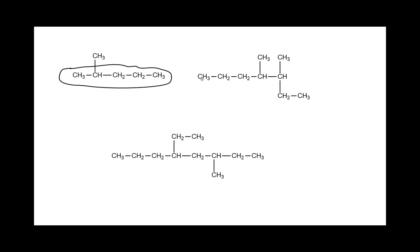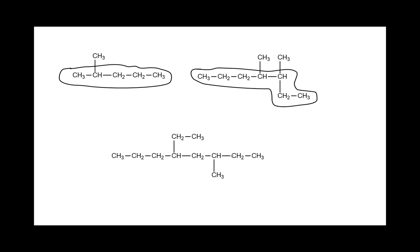For the next compound, the longest chain goes 1, 2, 3, 4, 5, 6, 7 — seven carbons. Going up at any branch point would make it shorter. So I'll mark off that seven-carbon chain. And for the compound on the right, the longest chain is drawn straight from left to right: 1, 2, 3, 4, 5, 6, 7, 8 — eight carbons. I'll mark that off as well. Sometimes the chain is drawn straight; other times it's curved, which can make it trickier.